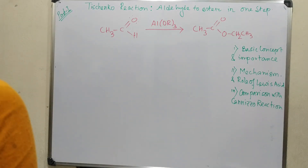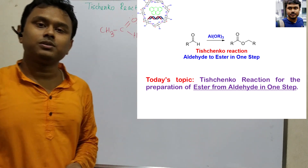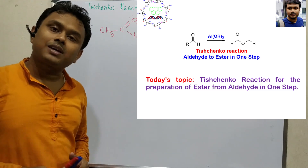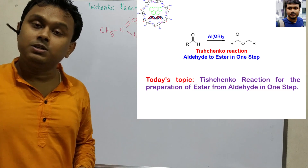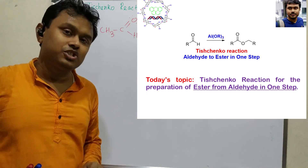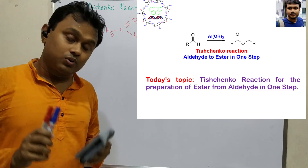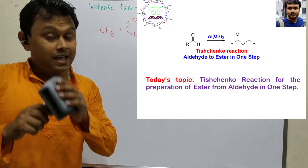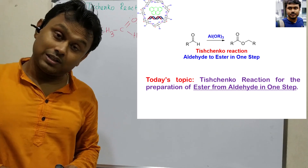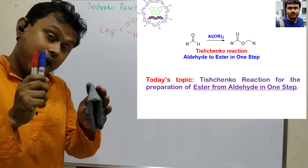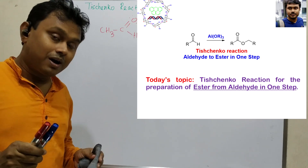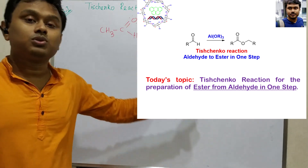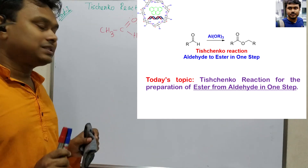Welcome students to my channel Chemistry: The Mystery of Molecules. Today we are going to discuss the Tishchenko reaction — the conversion of an aldehyde to an ester. In previous videos I discussed the Cannizzaro reaction in detail, including basic concept, examples, cross-Cannizzaro, and ester preparation in one step. Please watch those, especially the fourth part on aldehyde-to-ester conversion, as this reaction is similar.